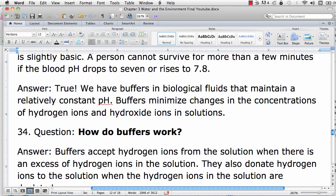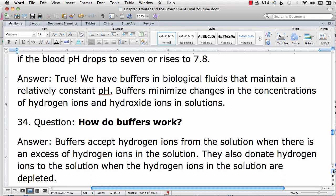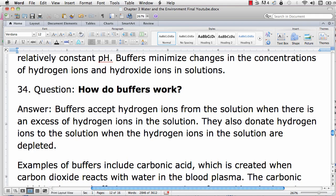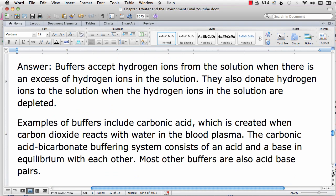We essentially have buffers in biological fluids that maintain a constant pH. Buffers accept hydrogen ions from a solution when there are too many hydrogen ions in that solution. They donate hydrogen ions to the solution when hydrogen ions are too few. For example, when carbon dioxide reacts with water in the blood plasma, carbonic acid is created.